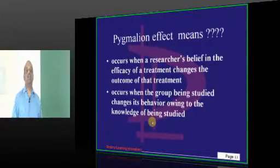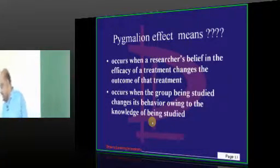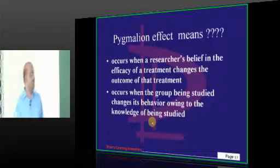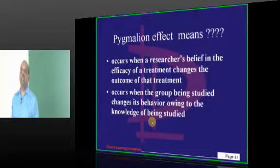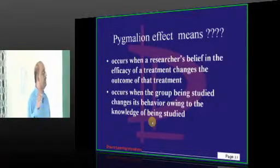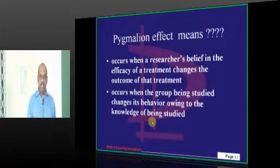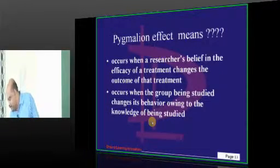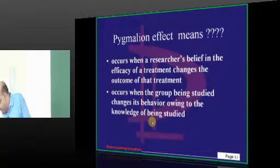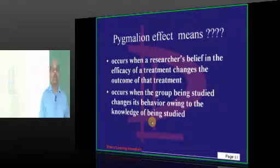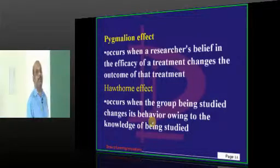Which kind of bias is called Pygmalion effect in the biostatistics is the question. Who will give me the correct answer? The first one or second one? Which is called first one? That is when a researcher believes in the efficacy of the treatment, it changes the outcome. Dr. Dilip says second is called Pygmalion. Even Dr. Shankar from Bangalore says it is the second which is the Pygmalion. Nobody wants to say first.